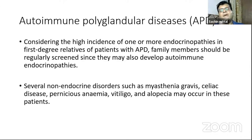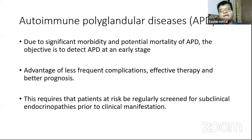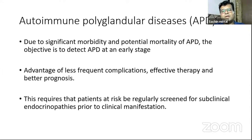Many non-endocrine disorders can be part of autoimmune polyglandular disease and give a clinical clue — for example, myasthenia, celiac, pernicious anemia, vitiligo, and alopecia. The objective of screening is to detect patients early — many times before the onset of an overt metabolic defect, at the time of serological abnormality or even earlier if possible. This allows us to give better outcomes, treat disease at a less severe spectrum, and provide more effective therapy.